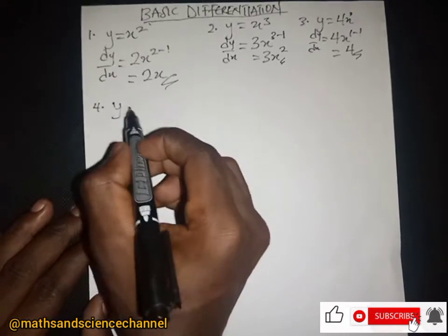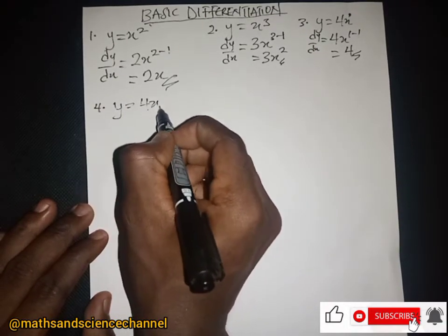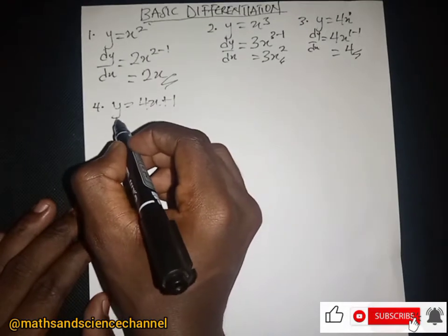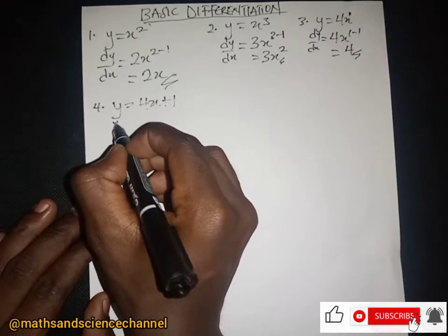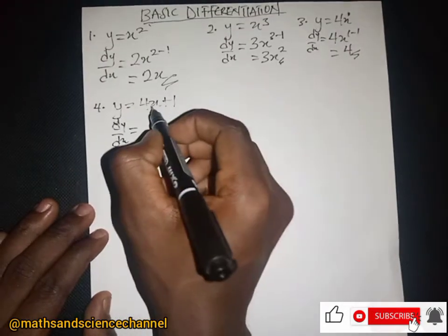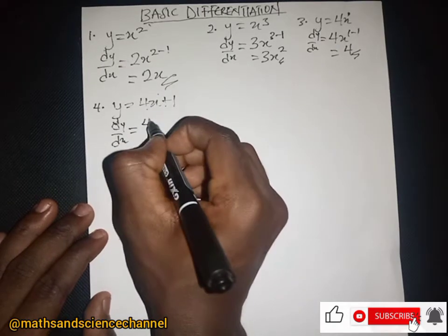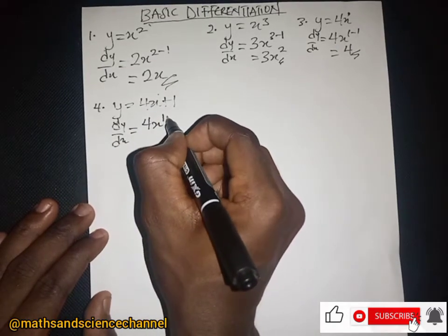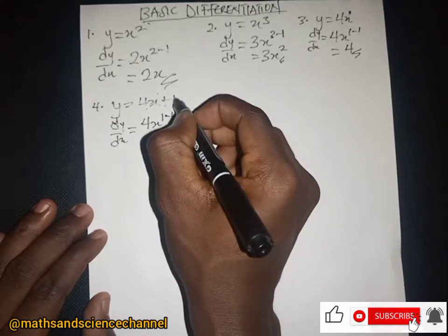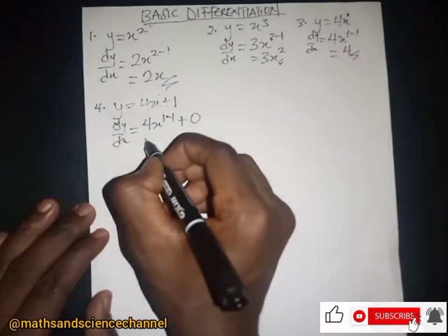Now let's look at y equal to 4x plus 1. We have dy/dx equal to — for 4x we drop the one and still have four, we subtract one from the exponent, and when we differentiate a constant we just get zero — so we have just 4.